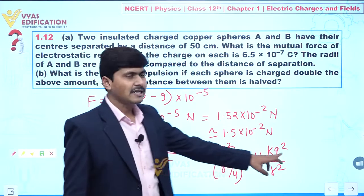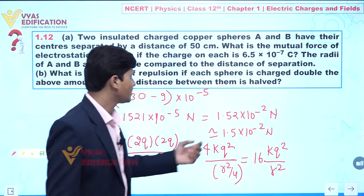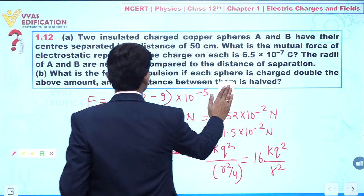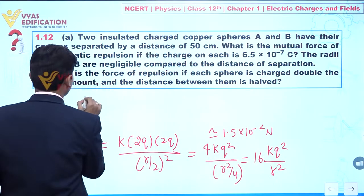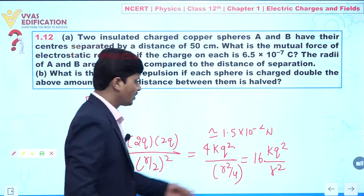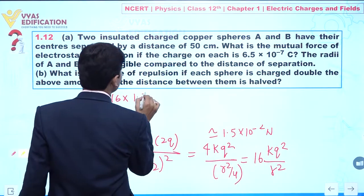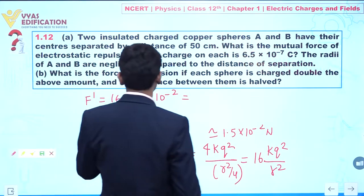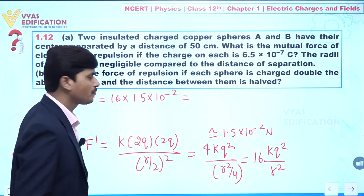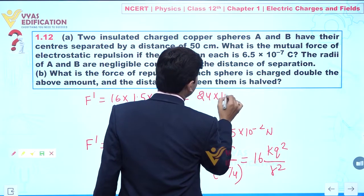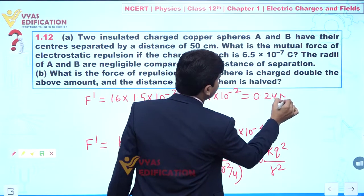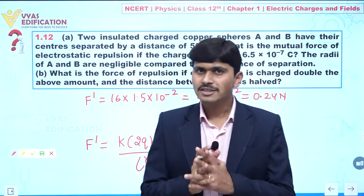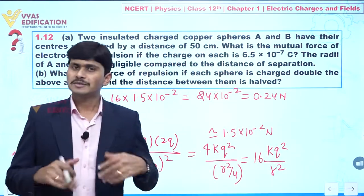Since kq²/r² equals the original force of 1.5 × 10⁻² newtons, we get F' = 16 × 1.5 × 10⁻² = 24 × 10⁻² = 0.24 newtons. This is the repulsive force when the charge on each sphere is doubled and the distance between them is halved.